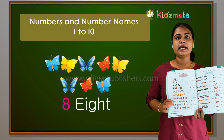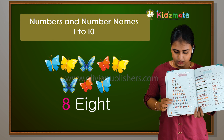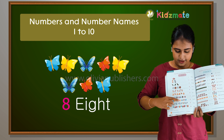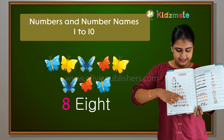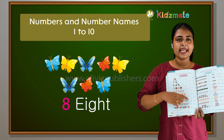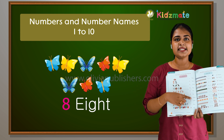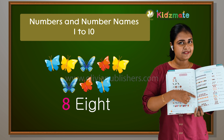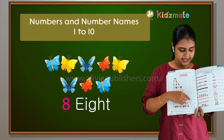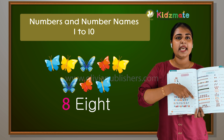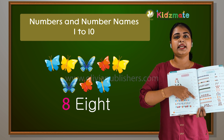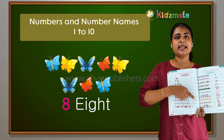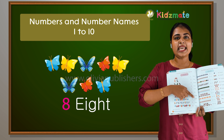Butterflies. How many butterflies? 1, 2, 3, 4, 5, 6, 7, 8. So 8 is the number and E-I-G-H-T is the number name. We can write the number name E-I-G-H-T, 8.